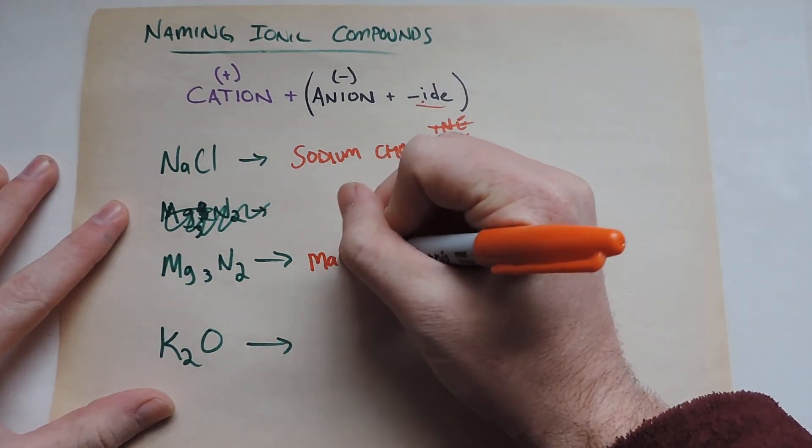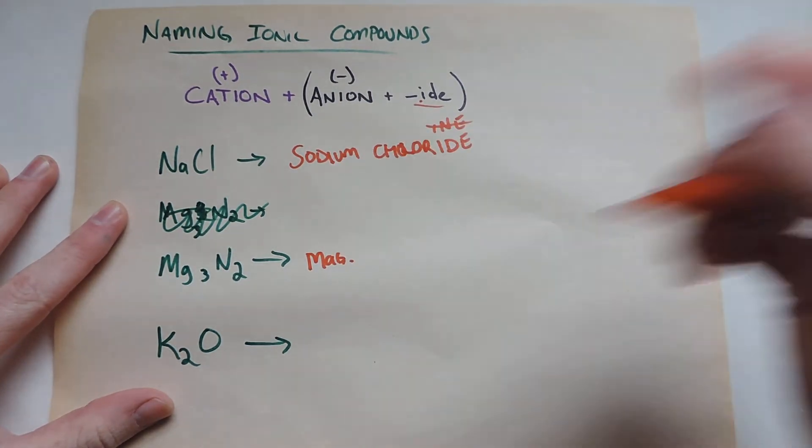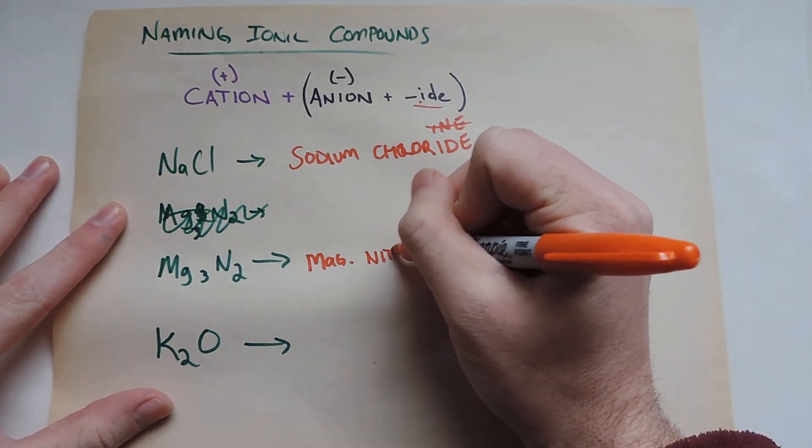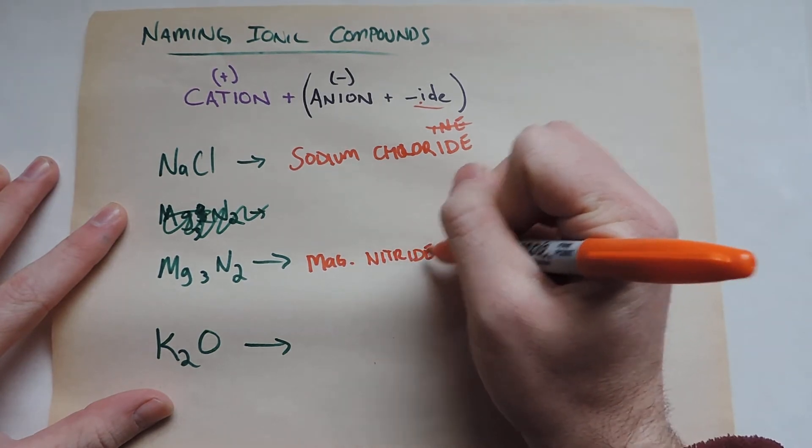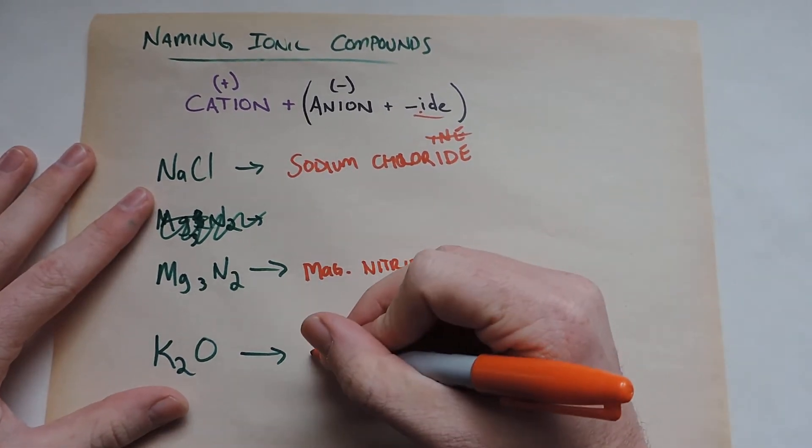So this one we're going to have magnesium nitride. And these endings are very important because soon we're going to look at polyatomic ions. And they have nitrates, nitrites, and there's nitride. So it's important to be clear.